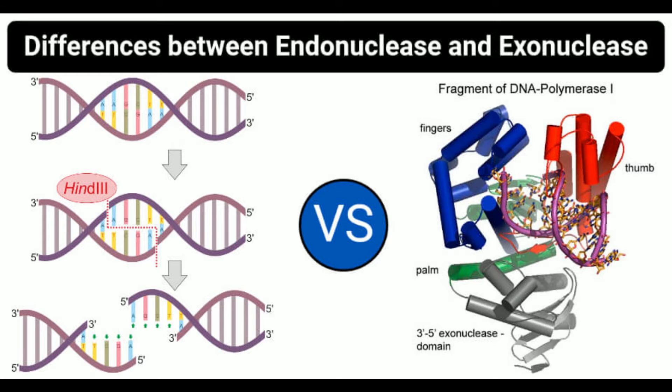Exonuclease definition: Exonucleases are enzymes that cleave DNA sequences in a polynucleotide chain from either the 5' or 3' end. Like endonucleases, exonucleases are hydrolyzing enzymes that cleave the phosphodiester bond between nucleotides. One of the most important routes of RNA degradation in both archaea and eukaryotes is by the multi-protein exosome, which consists of multiple exoribonucleases. Additionally, exonucleases are found in the venoms of snakes and lizards, where they work by cleaving DNA coding for essential proteins within the body.